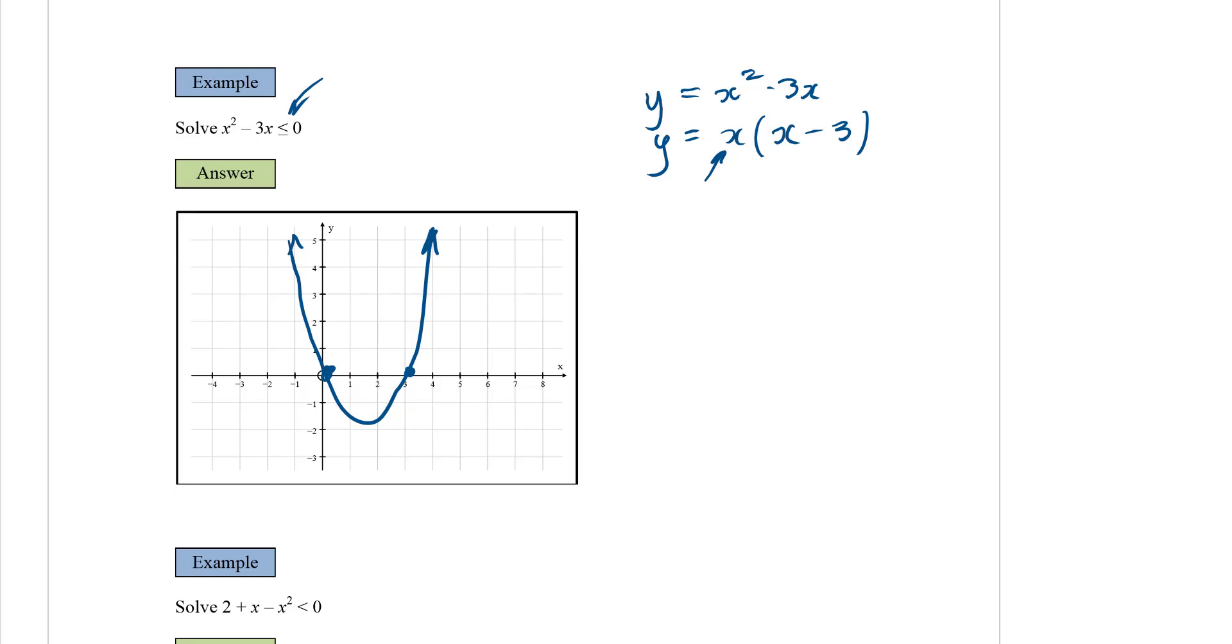So in this one here, we want to know what are the parts where it's less than or equal to 0. So we're looking for this part down here, the part that is below the axis. So I can see, looking at it like that, that all the x values between 0 and 3, and including 0 and 3, will satisfy this quadratic inequality.